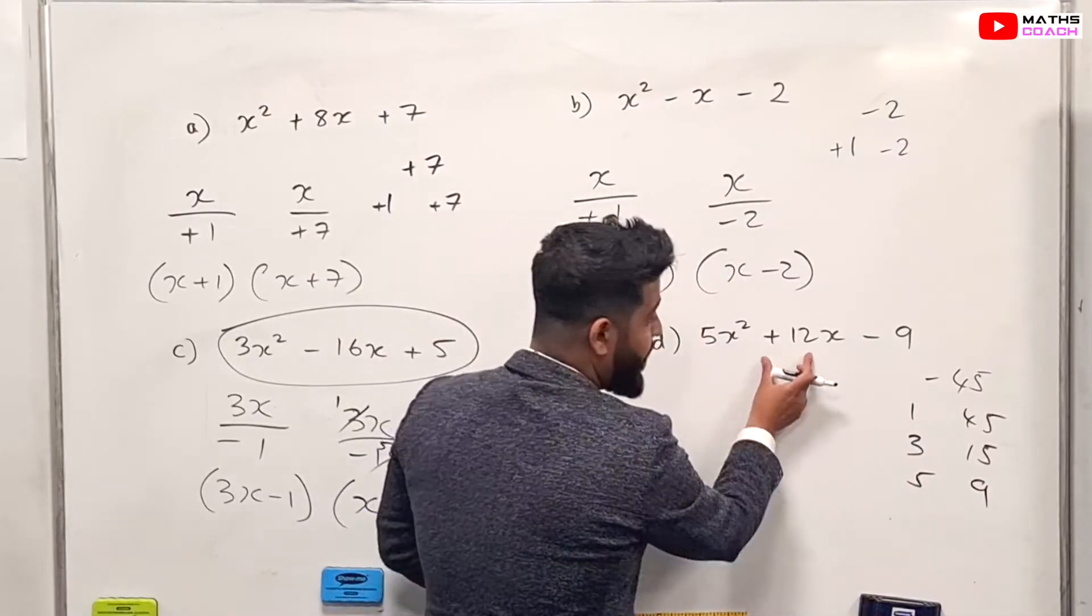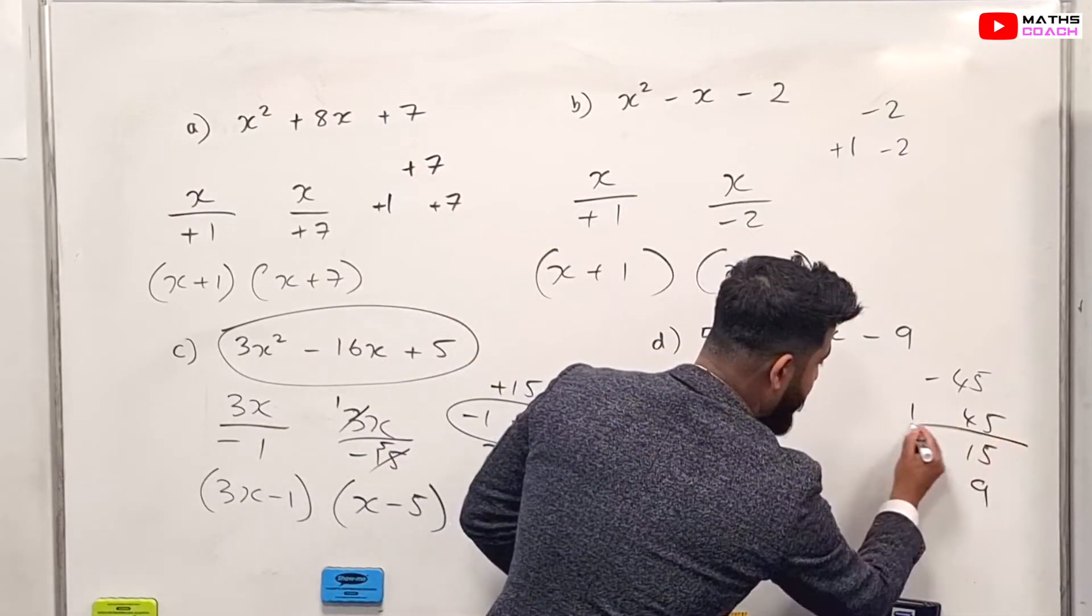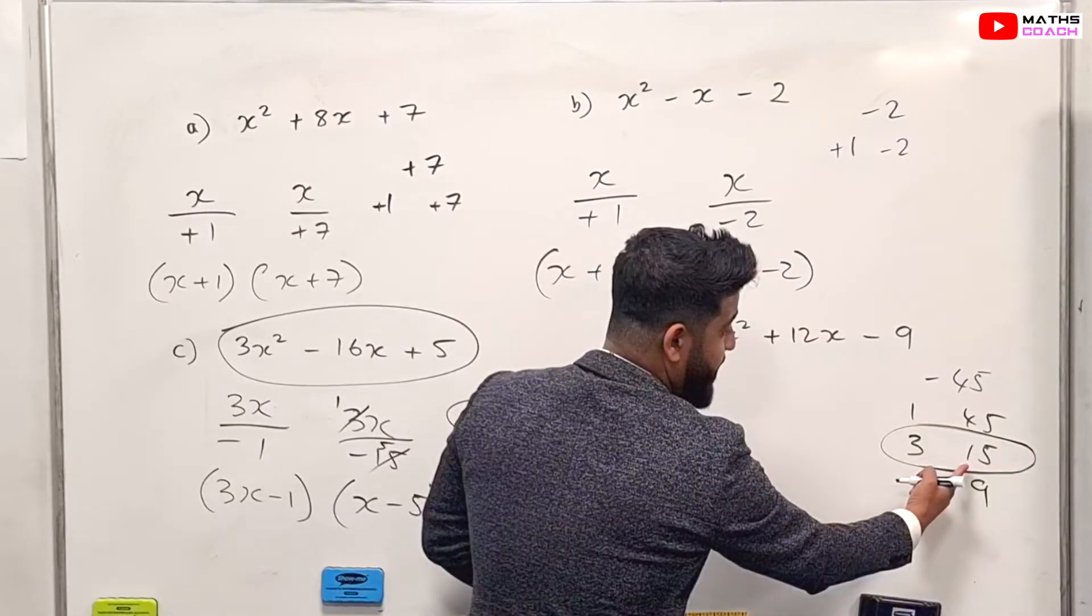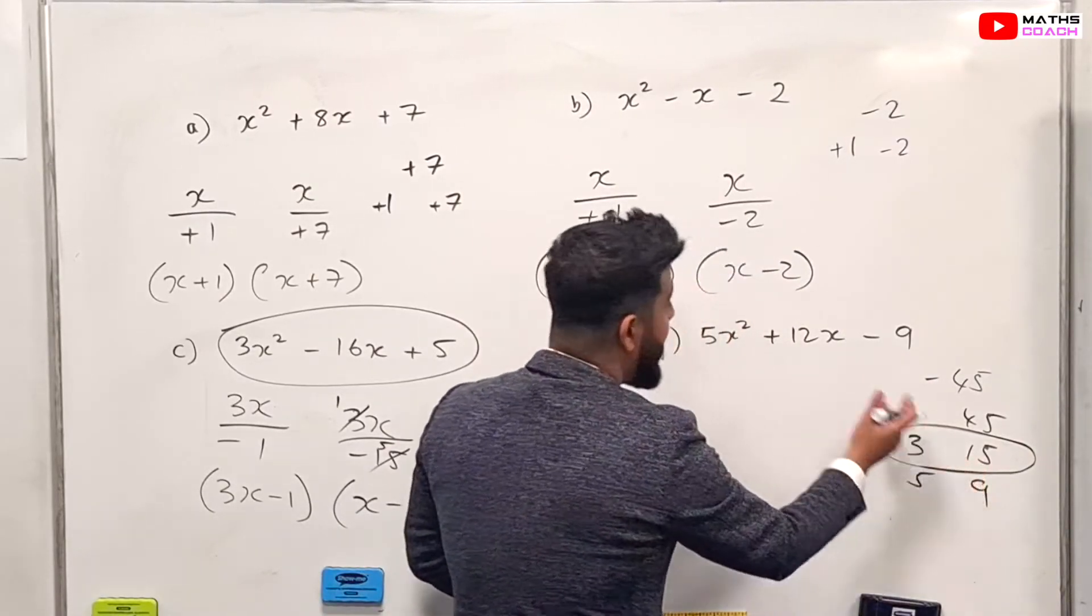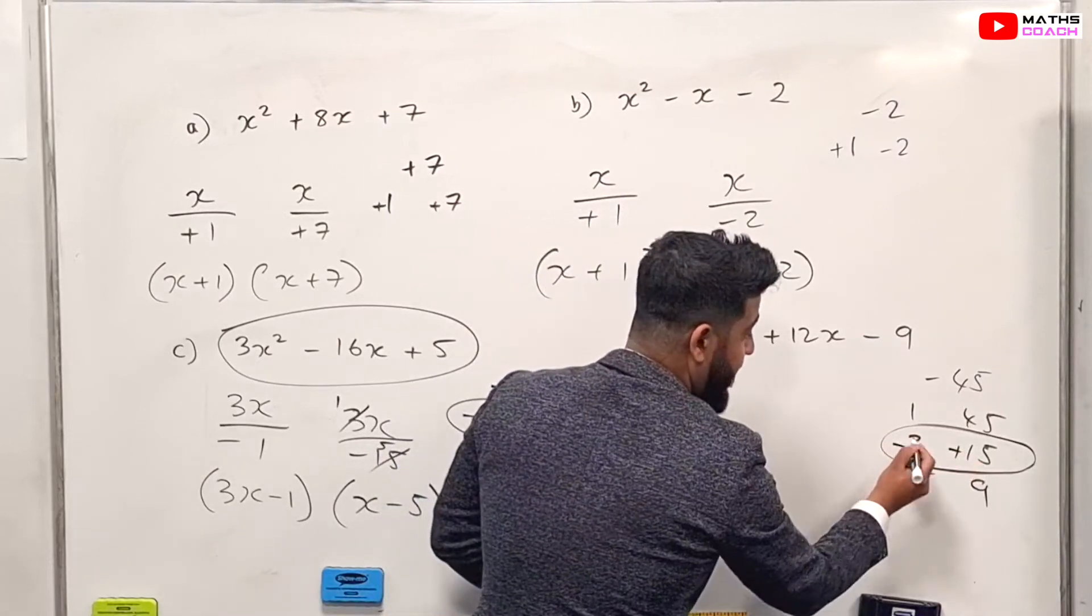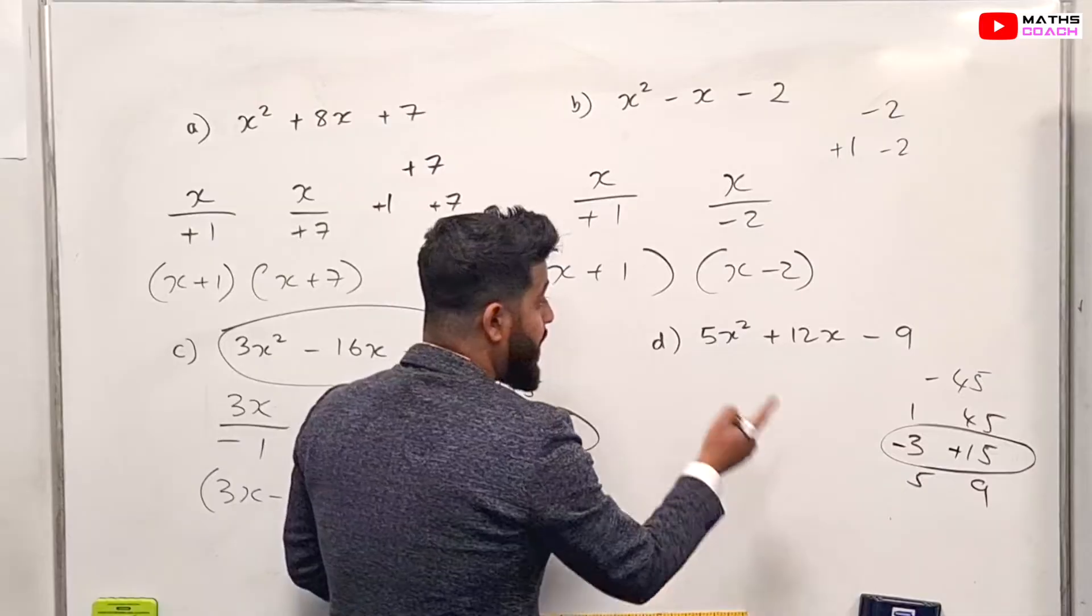So once again, which combination gives 12? It's this one in the middle here. And we're looking for minus, so one of them has to be positive and one of them has to be negative. But we want to make a plus 12, so 15 minus three gives us plus 12.